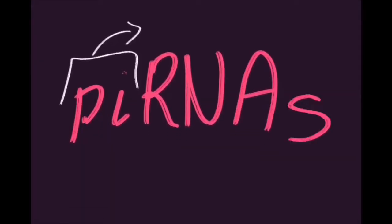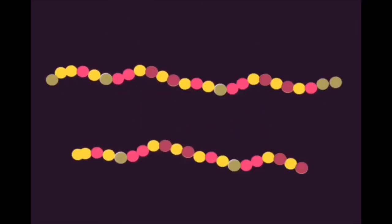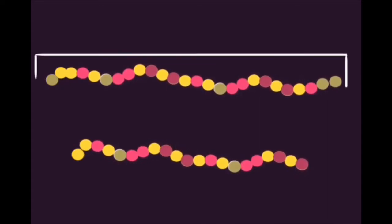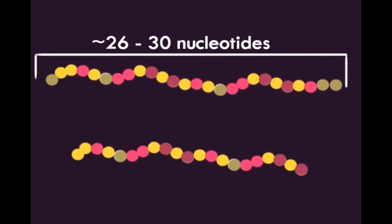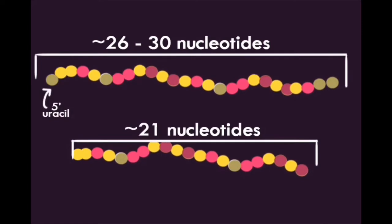PI-RNAs, or PIWI-interacting RNAs, are a family of non-coding RNAs that have been relatively recently discovered. PI-RNAs are longer than their other non-coding RNA counterparts, ranging from 26 to 30 nucleotides long in Drosophila, compared to the roughly 21 nucleotide siRNAs that are also found in Drosophila.